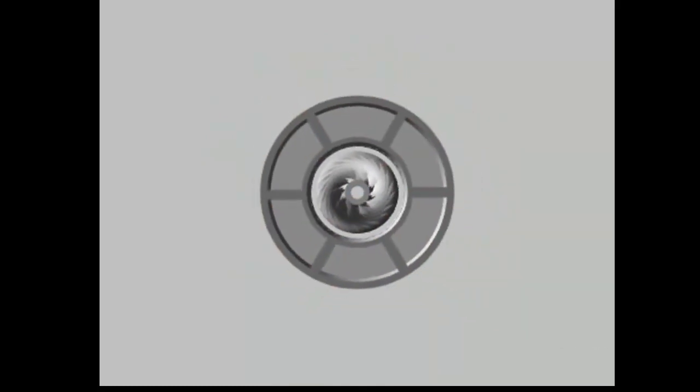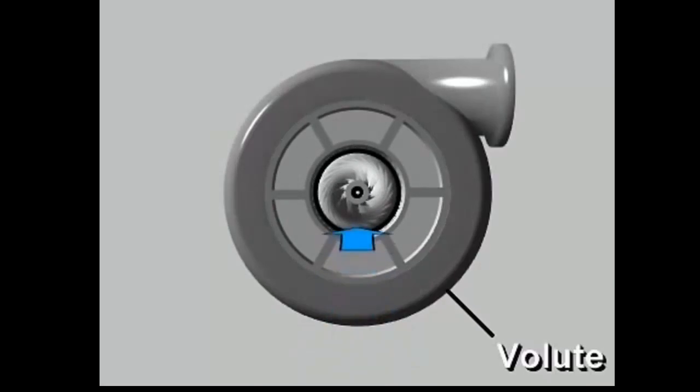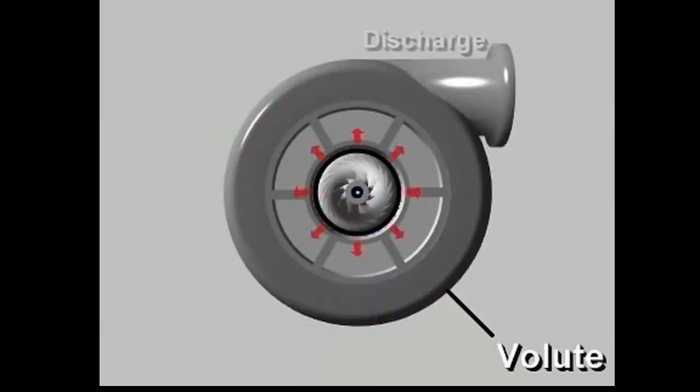The volute-shaped casing collects the slow-moving, high-pressure vapor from around the diffuser and conveys it to the discharge connection of the compressor.